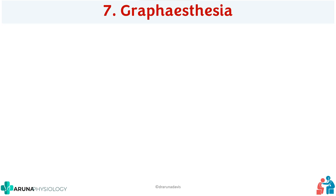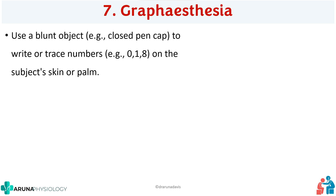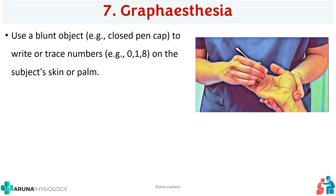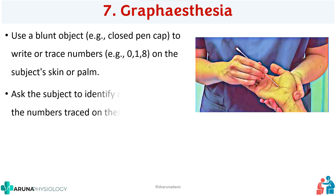Next is graphesthesia. The term itself suggests it has something to do with writing. Use a blunt object like a closed pen cap and trace numbers on the subject's skin or palm. Use numbers like 0, 1, or 8 — avoid numbers like 6 or 7 because they can be confusing depending on the direction of writing. You can also use alphabets, provided the subject is literate and can read that language. Ask the subject to verbally report what number was traced on their skin.